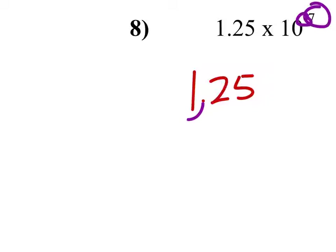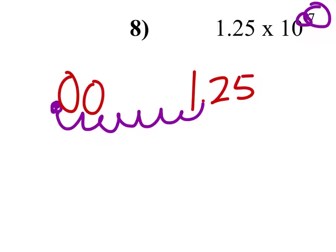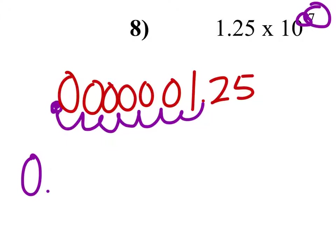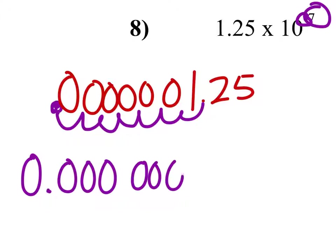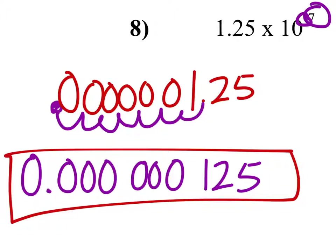Seven times exact. One, two, three, four, five, six, seven. And that's where the decimal will go, so I will replace all the empty spaces with zeros. We got 0.0000001 25. There is the answer.